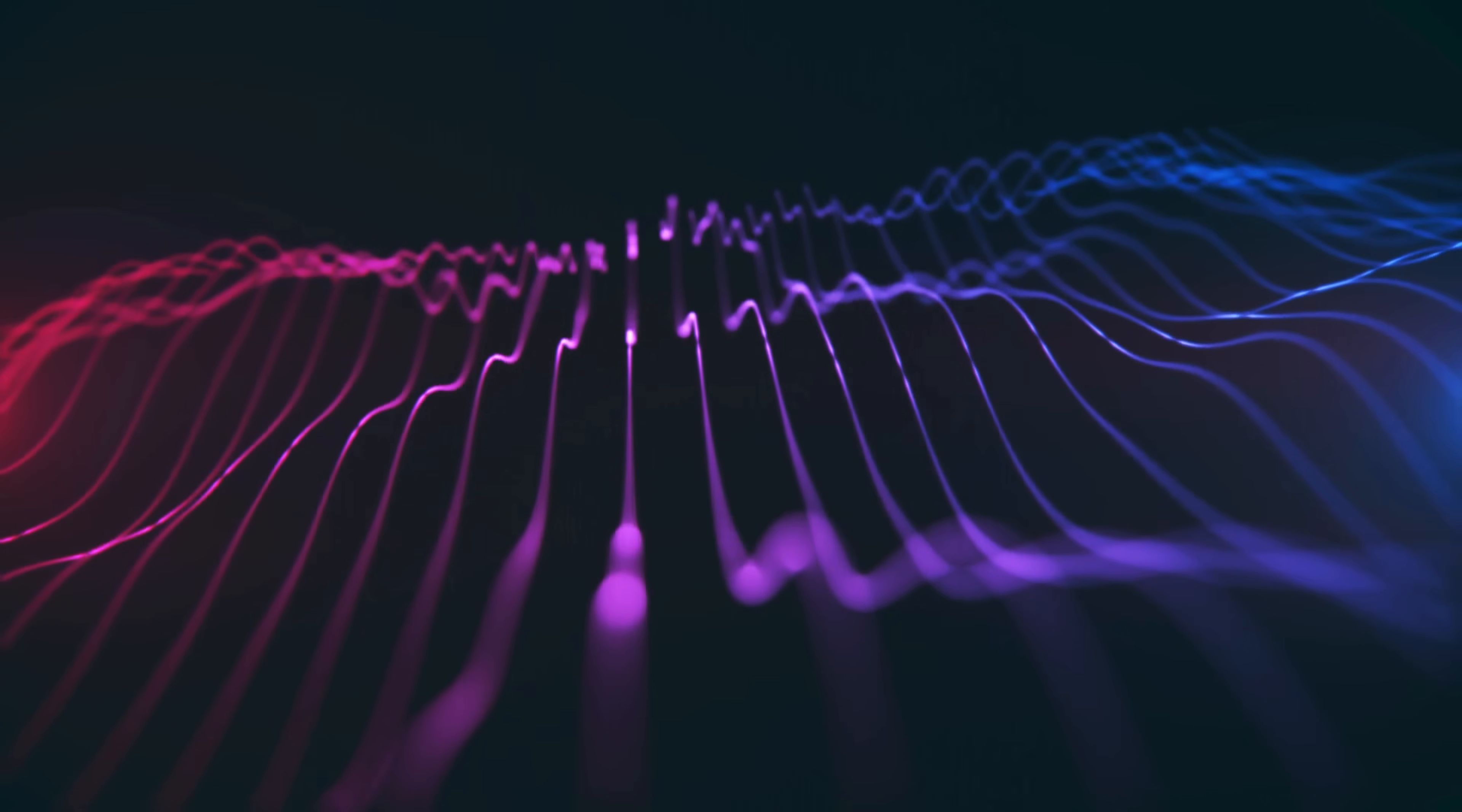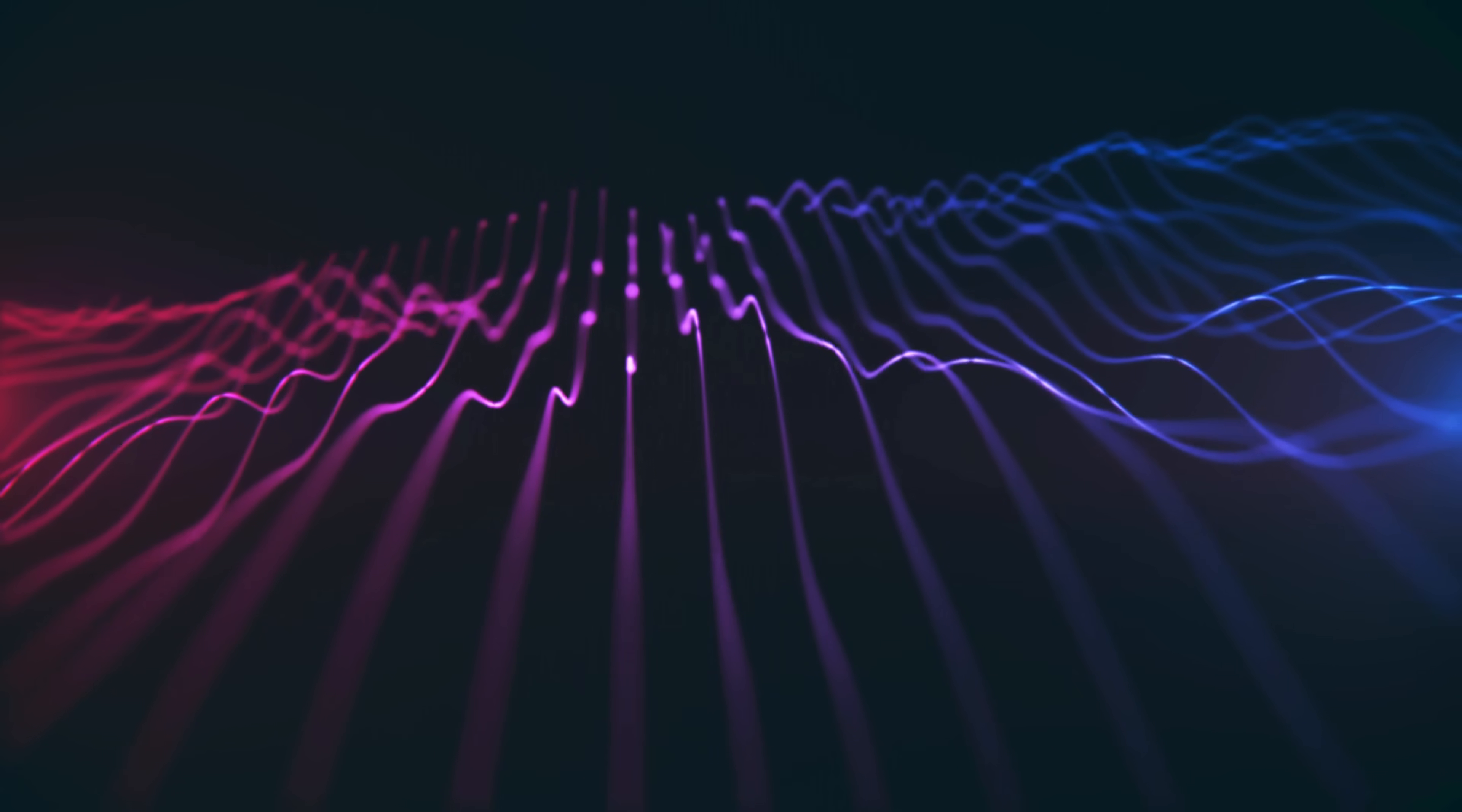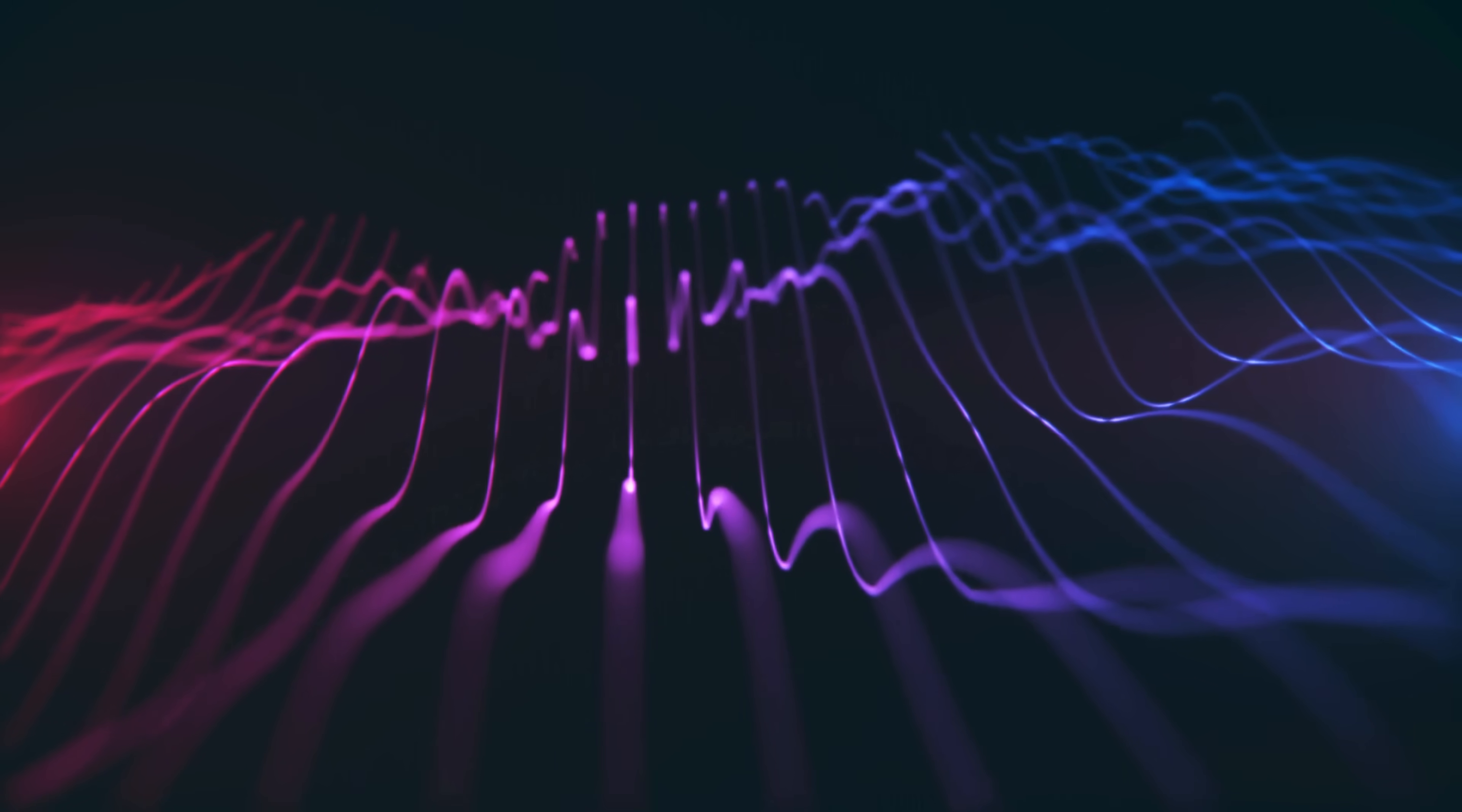This pattern could only mean one thing. Light was not made of tiny particles traveling in straight lines, but instead behaved like a wave, spreading out and interacting with itself in a way that defied classical intuition. So, this proved that light was a wave?